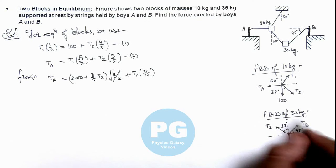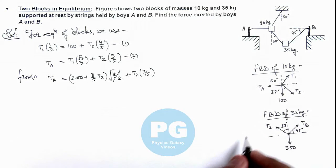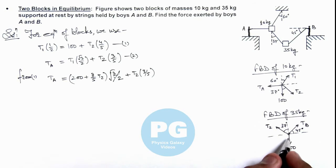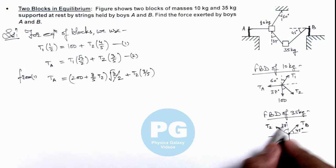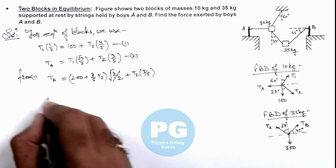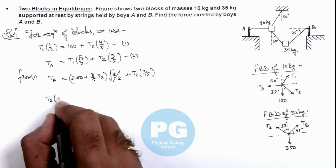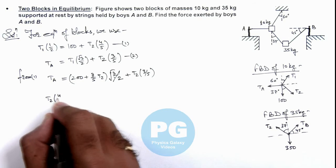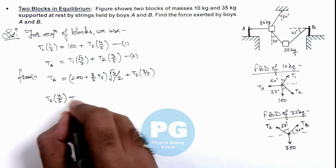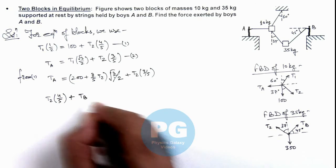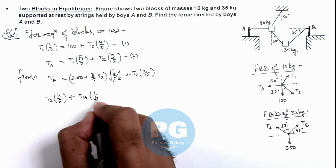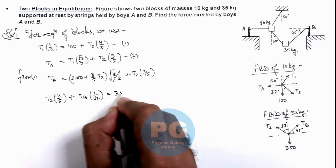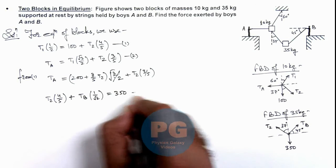For the 35 kg block, we balance the forces. In the vertical direction: T2 cos 37°, which is T2 × (4/5), plus T_B sin 45°, which is T_B × (1/√2), equals 350 newtons. This is our equation 3.